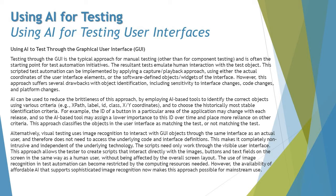Testing through the GUI is a typical approach for manual testing, other than for component testing where we use a white box testing approach done at the back end at the code level. It is often the starting point for test automation initiatives. The resultant tests emulate human interactions with the test object. This scripted test automation can be implemented by applying a capture-and-playback approach using standard commercial tools, using either actual coordinates of the UI elements or the software-defined objects or widgets of the interfaces.